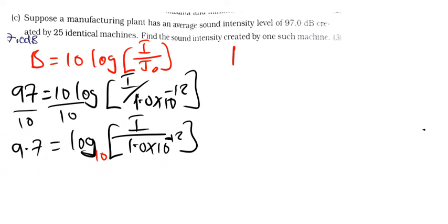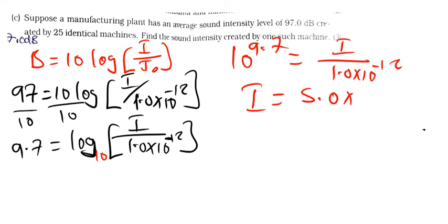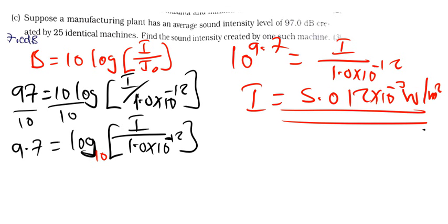So it will be 10 raised to the power 9.7 is equal to I divided by 1.0 times 10 to the power negative 12. So the intensity now, if I cross multiply, I'm going to find is 5.012 times 10 raised to the power negative 3 watts per square meter. Now this is the intensity of 25 machines.